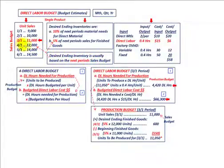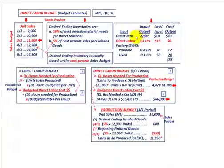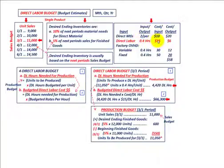For our next period, April, that's 12,000 units in budgeted sales. For direct labor costs, this single product takes 4/10 of an hour of direct labor per unit, and the direct labor cost is $15 per hour. So 4/10 of an hour times $15 per hour gives us a per unit cost of $6.